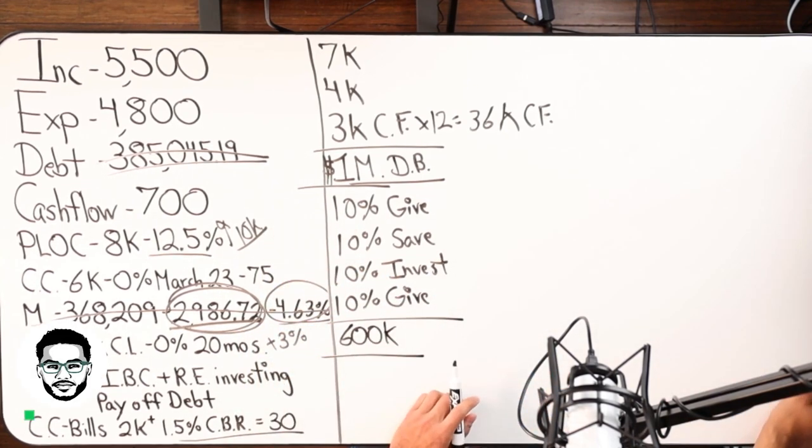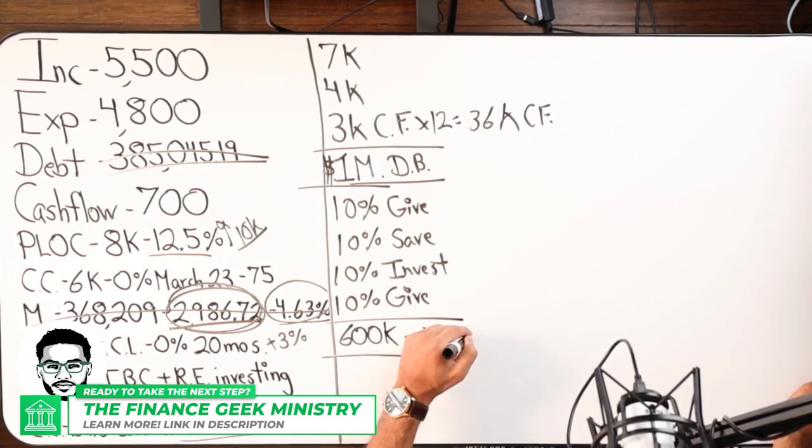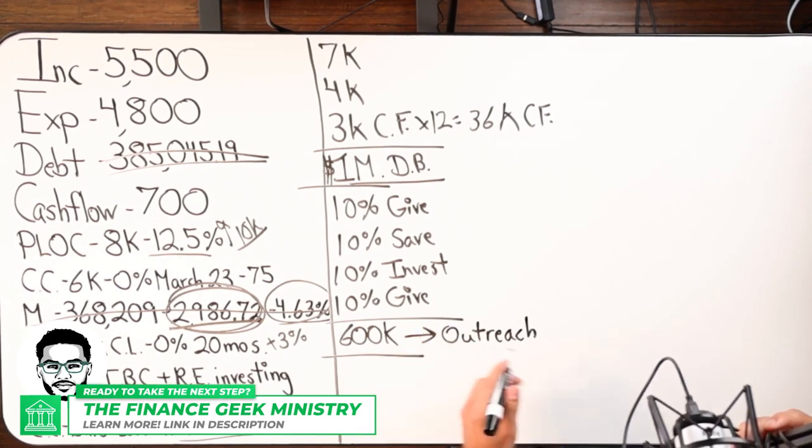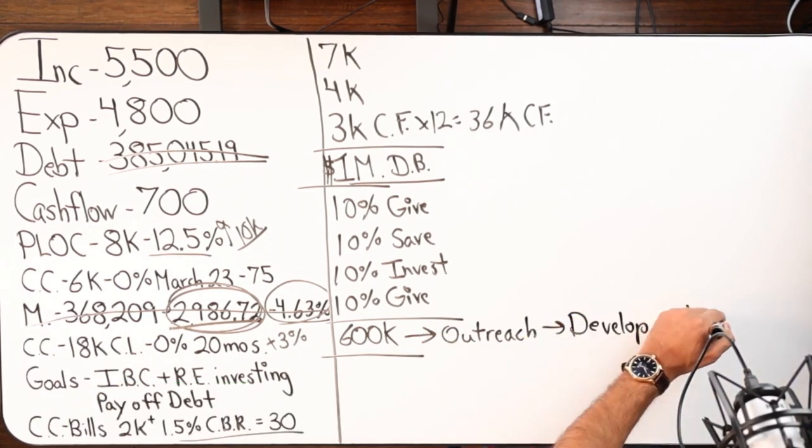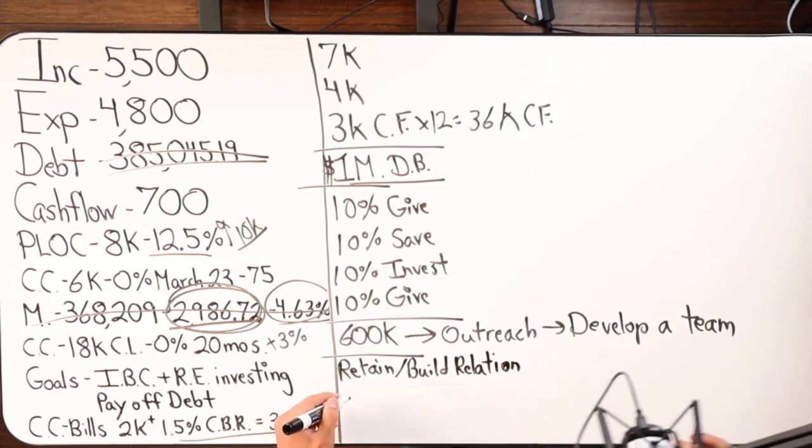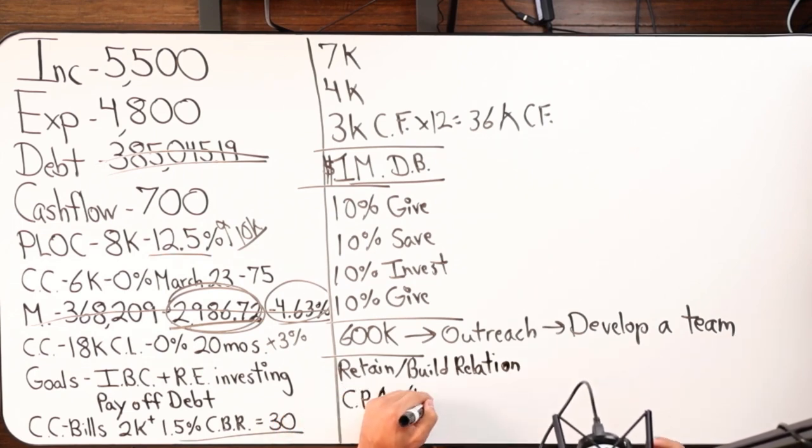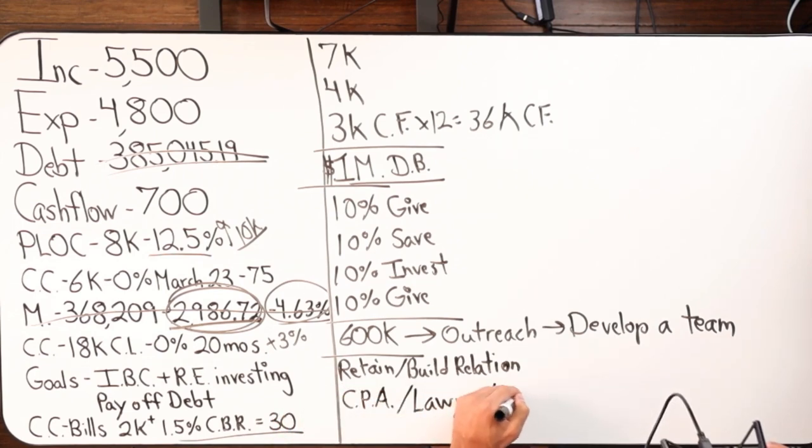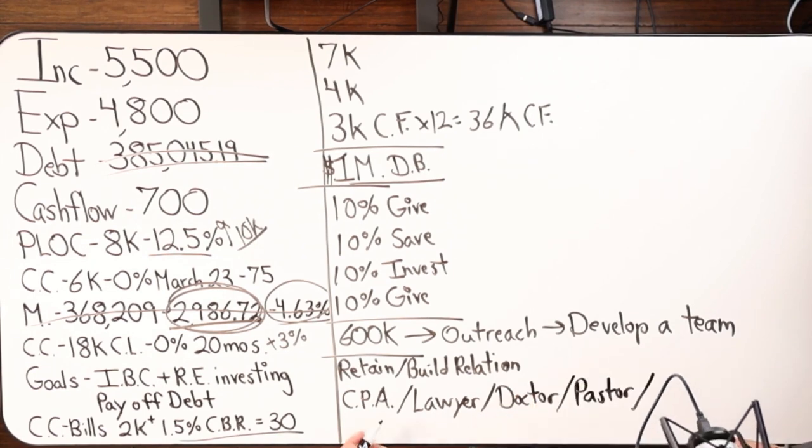From there, I'll do some outreach. I'm going to develop a team. I'm going to retain and build relationships with a CPA, lawyer, doctor—most likely a chiropractor—a pastor, financial coach, and business coach.